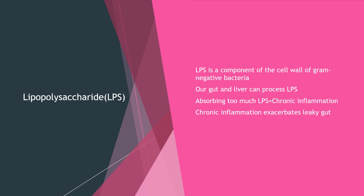Now that we know what leaky gut is, one of the biggest problems is that bacterial components leak from the gut into the blood. Once those bacterial components get into the blood, they cause an immune reaction and chronic inflammation. Lipopolysaccharide, or LPS, is one of these components — it's a part of the cell wall of gram-negative bacteria. Our gut and liver can process LPS, but there's a maximum amount they can handle, and the primary enzyme that does this is alkaline phosphatase.